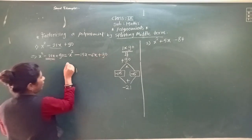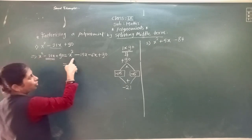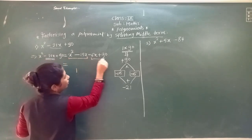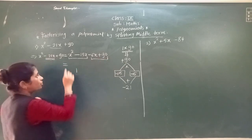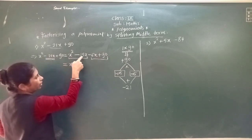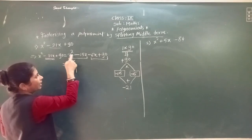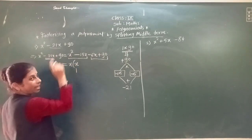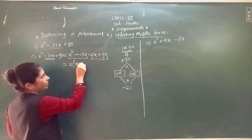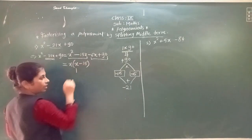So we will write x² minus 21x plus 90 equals to: instead of this middle term we write x² minus 15x minus 6x, plus 90. Before that, how many terms were there? 1, 2, 3. Now you have got 4 terms. So we have to make a group of 2 each. Here, what is common in these 2 terms? x is common.